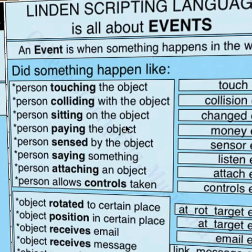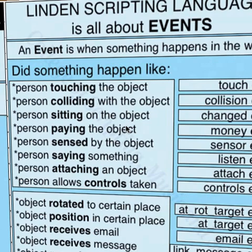Linden's scripting language is based on events. An event is when something happens in this world, such as when a person touches an object, or collides with it, or when someone pays the object. We have 33 events which can trigger our code, and most importantly, only events can trigger our code.